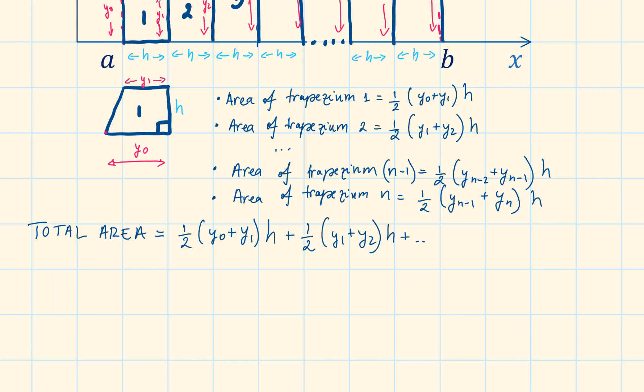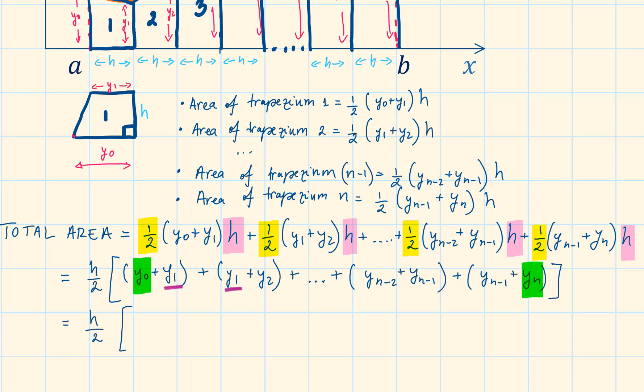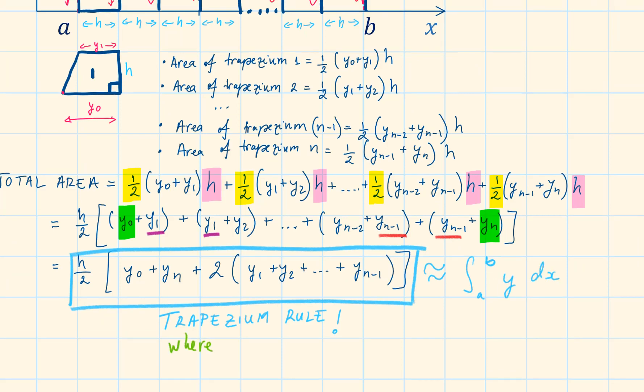To approximate the area under the graph, we will do a sum of these trapeziums. We can simplify this further by factorizing out the half and the h. We can see from here that y0 and yn only show up once, everything else shows up twice. We can factorize the two out and this gives us the estimate of the area under the curve, or definite integral of y from a to b, where the width of the strips, the height of the trapezium, is equal to b minus a over n.